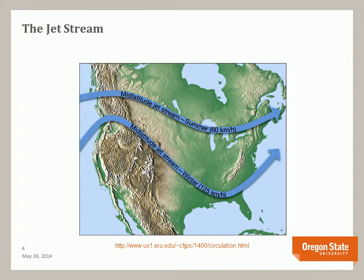Jet stream location and wind speed is dependent on seasons. In North America, during the winter, the jet stream is located further to the south with higher wind speeds. This means that colder polar continental air mass can penetrate further south, resulting in our colder temperatures. This jet stream also steers storms towards California and the Pacific Northwest, resulting in wet but mild winters.